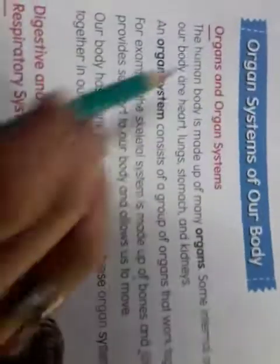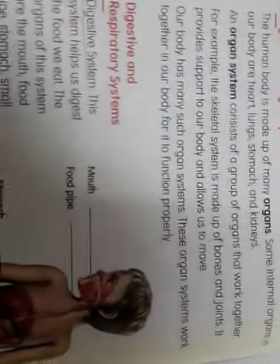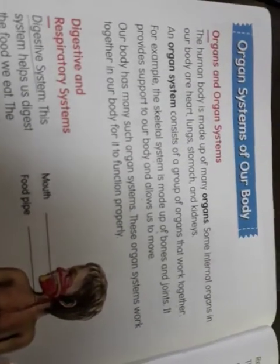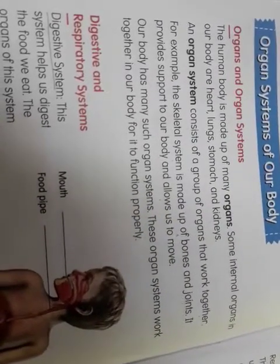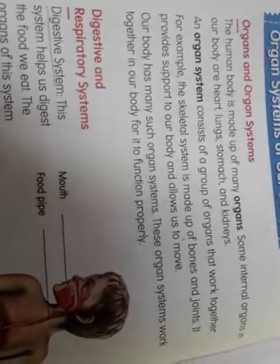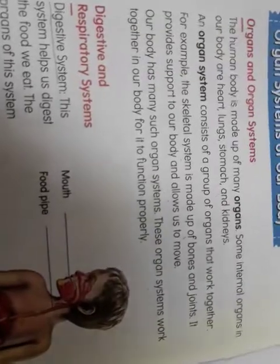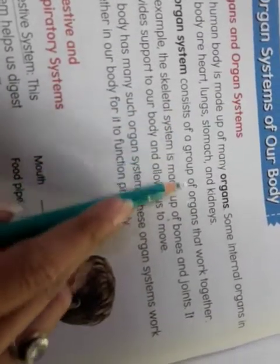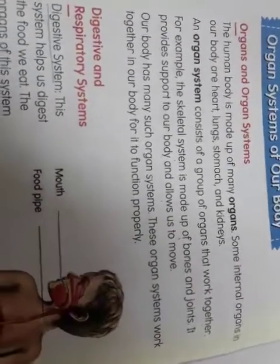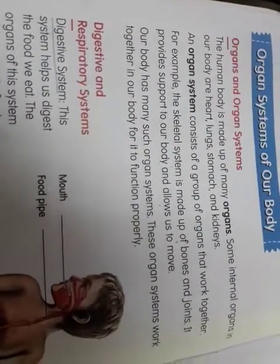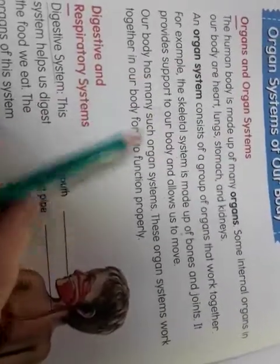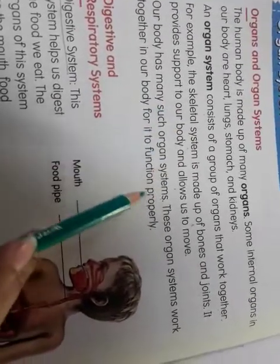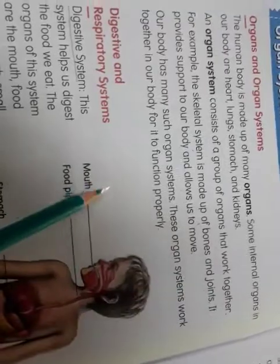The first lesson of block 10 is organs and organ systems. Organs are body parts that do specific work — for example, lungs, heart, stomach, and kidneys. An organ system consists of a group of organs that work together. For example, the skeletal system — its organs are bones and joints.